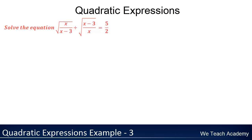Hello friends, welcome to our site Vudesha Academy. Today in this presentation we are going to solve an example under quadratic expressions. We have to solve the equation: the square root of x divided by (x minus 3), plus the square root of (x minus 3) divided by x, is equal to 5 by 2.